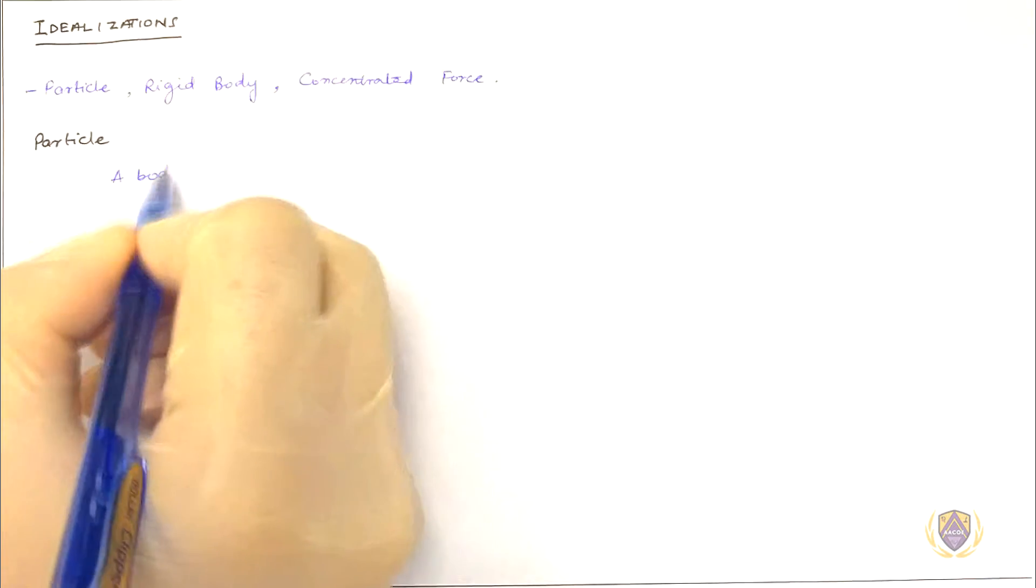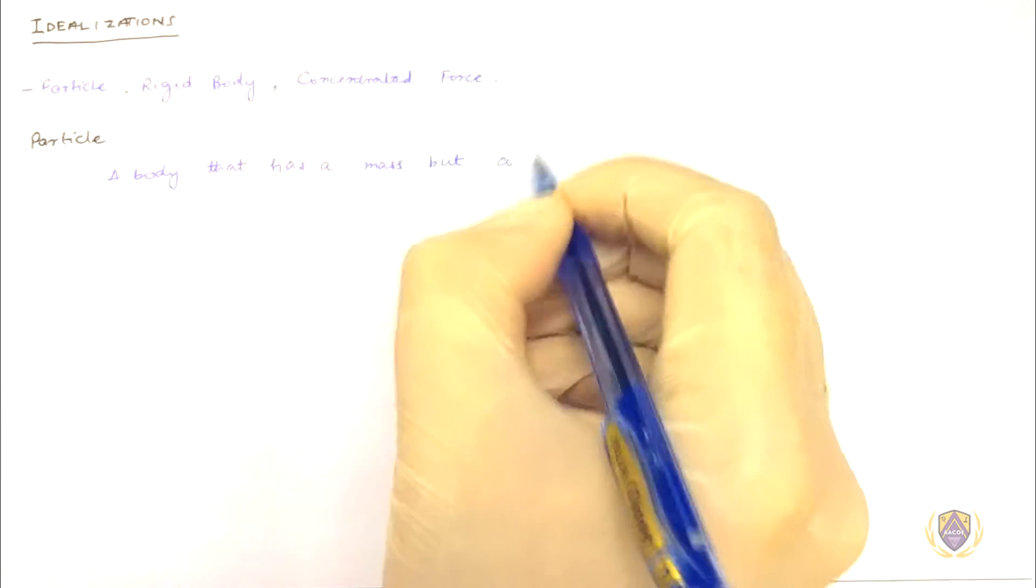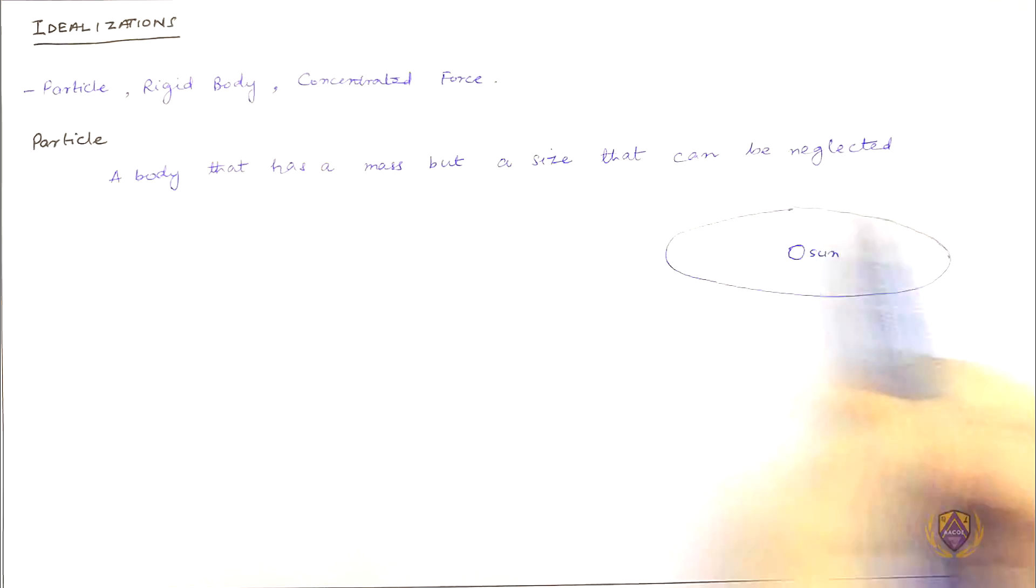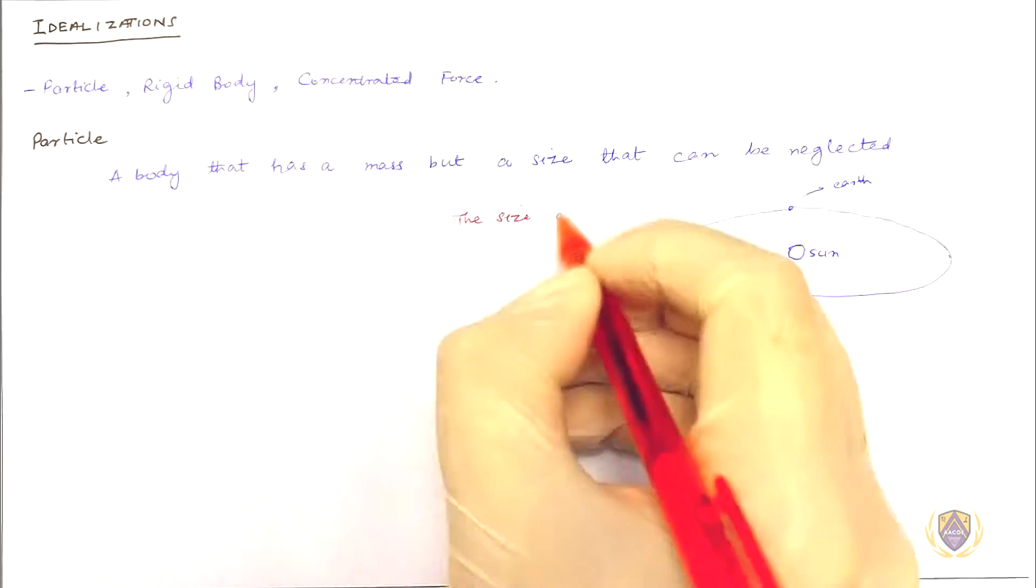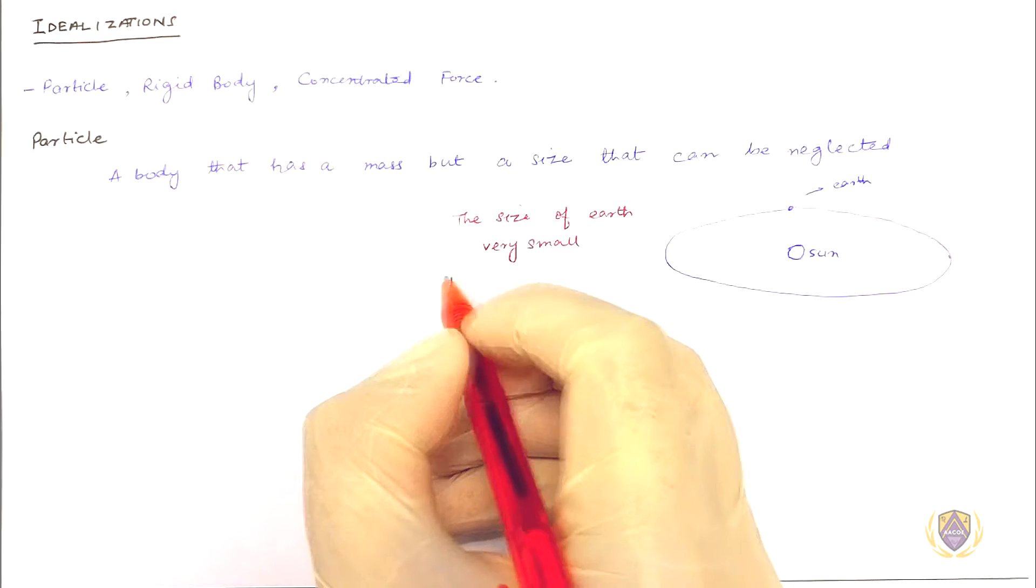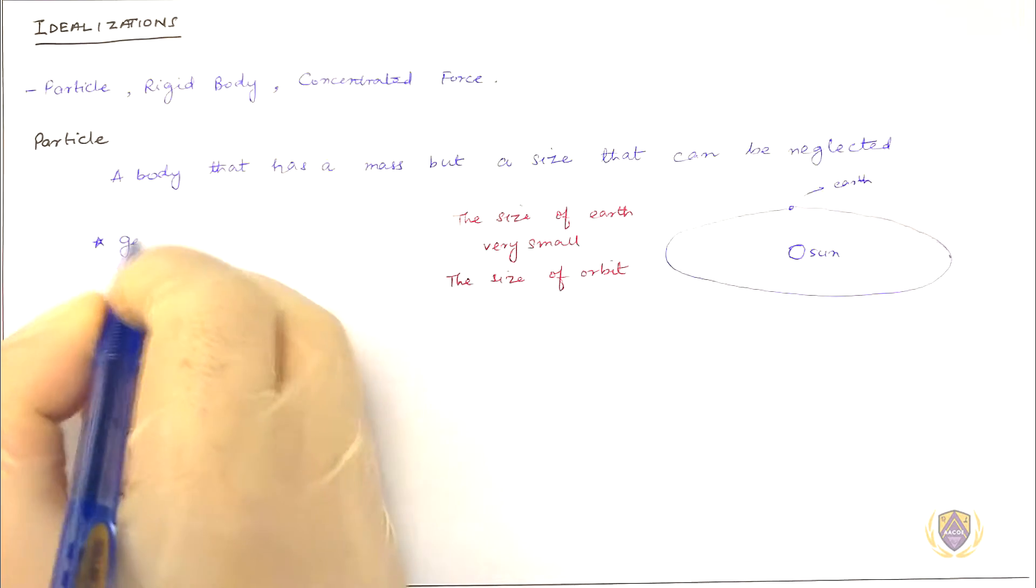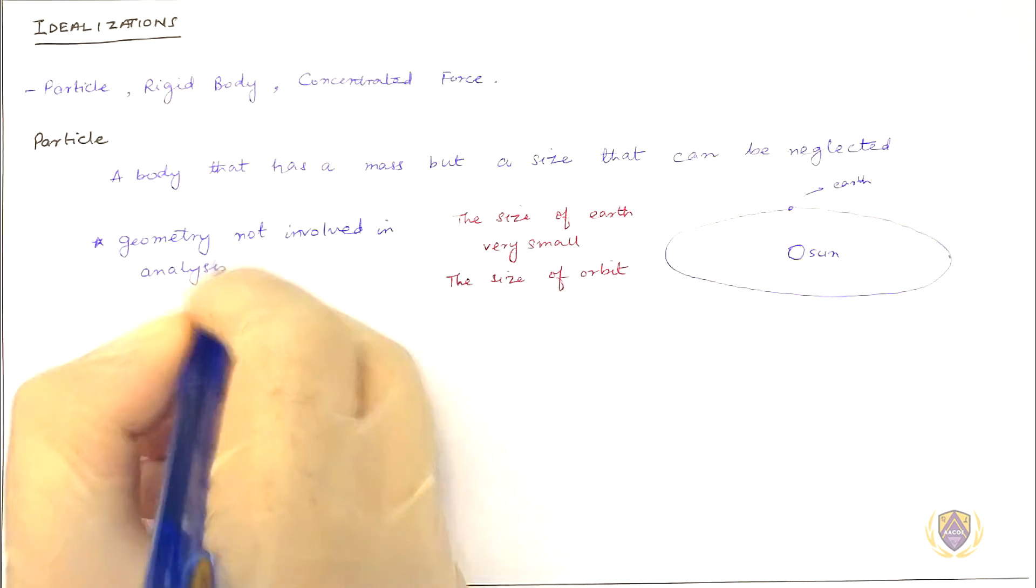Particle: A particle is a body that has mass but a size that can be neglected. For example, Earth orbiting around Sun. The size of Earth is very small when compared to the size of the orbit, so Earth can be approximated as a particle when analyzing the orbital motion, hence geometry is not involved in analysis of a problem.